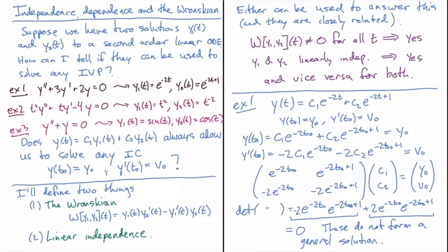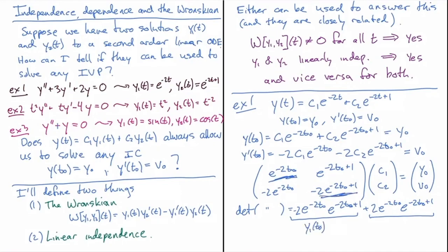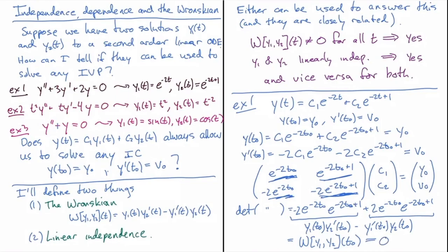So what is that determinant? What we found was that the Wronskian equals zero everywhere. The pieces came from: y1(t₀) times y2'(t₀), minus y1'(t₀) times y2(t₀) — that is exactly the Wronskian of y1 and y2 evaluated at t₀, and it equals zero. It's the invertibility of that matrix that is directly tested by the Wronskian.